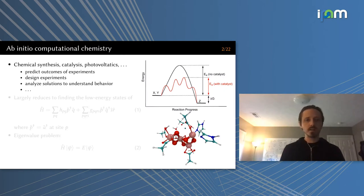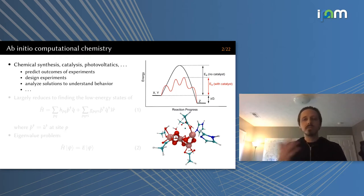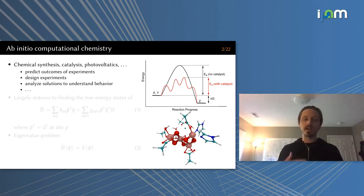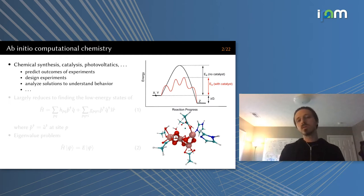It's worthwhile to explain a little about what computational chemistry is. We're in a chemistry department, so we naturally care about problems related to chemistry — be that chemical synthesis, catalysis, or properties like those involved in photovoltaics. So how does computational chemistry function, and how do computations interact with lab and experiment design?